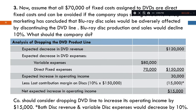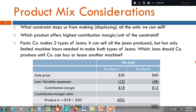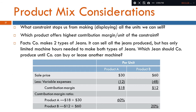The next topic is Product Mix Consideration, which is the fourth special decision area. Under this situation, first we have to answer the question: what constraint stops us from making and selling all the units we can sell? Using a product mix approach, we need to identify which product offers a high contribution margin per unit of the constraint.